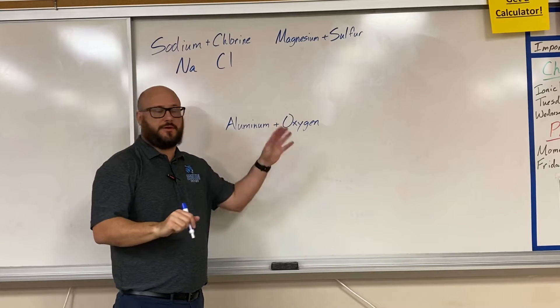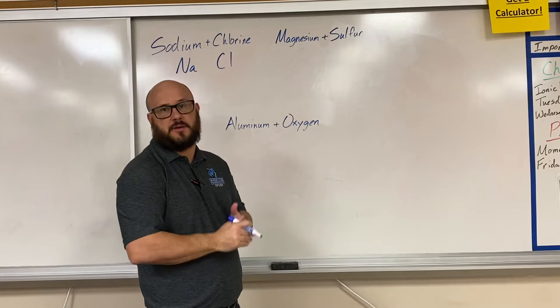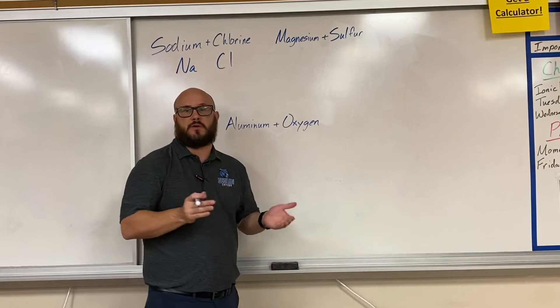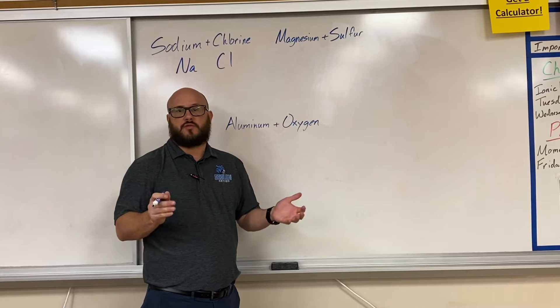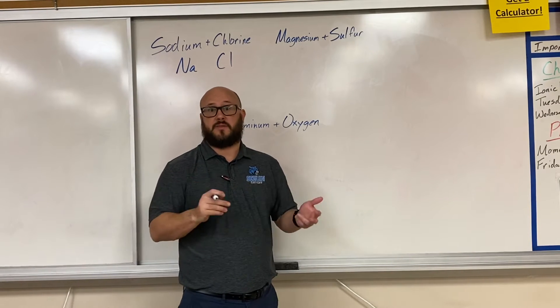The second step, after you've got your symbols written down, is to find the oxidation numbers for each of these elements. Now remember, oxidation number equals the number of electrons that are going to be lost or gained during the bonding process.